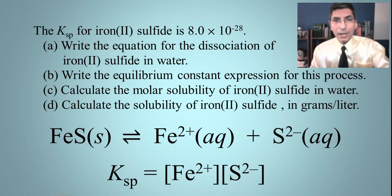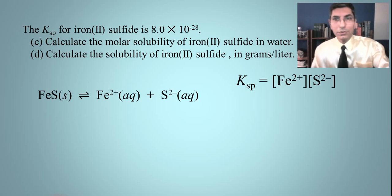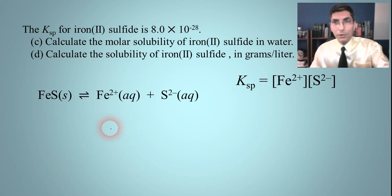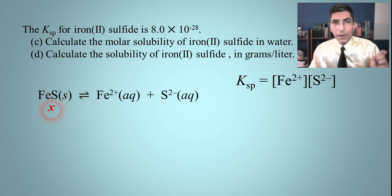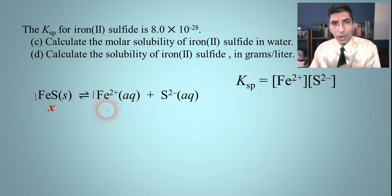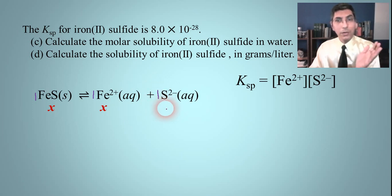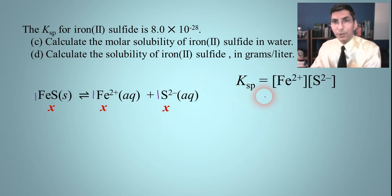Let's calculate the molar solubility of iron(II) sulfide in water. This time we don't know the molar solubility — that's our unknown, so let's call it X. Since it's a one-to-one ratio, the concentration of iron(II) ions will be X, and the sulfide concentration will also be X. Now we can plug and chug into the Ksp expression.